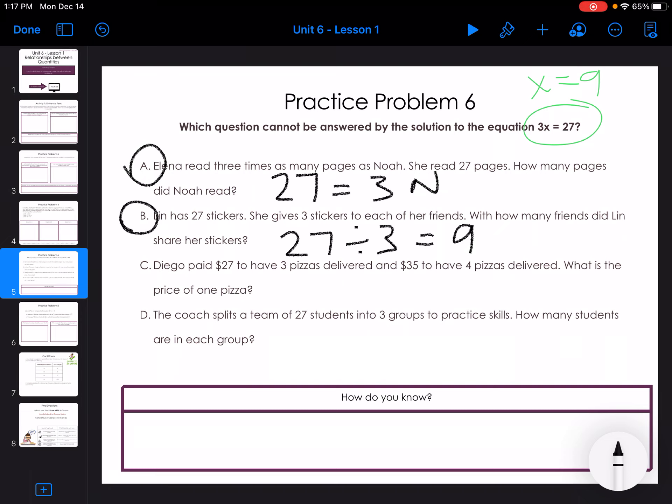Diego paid $27 to have 3 pizzas delivered, and $35 to have 4 pizzas delivered. What is the price of each pizza? Well, that doesn't make sense, because 27 divided by 3 would be 9, but 35 divided by 4 would not be 9. So I'm thinking it's C. And then the last one, you have a team of 27 split into 3 groups. How many kids are in each group? 9. So I'm going with C.